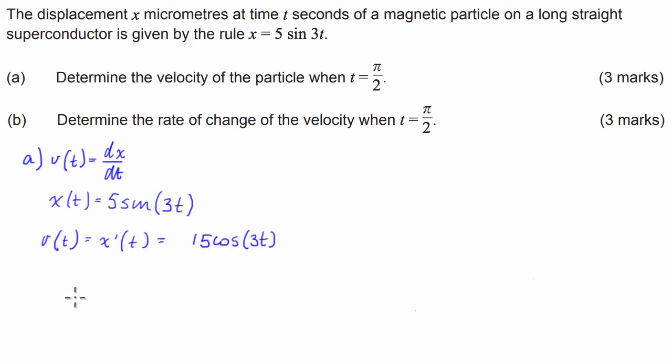So there is our velocity equation and then we have to compute velocity when we're at time equals pi over 2. So what we have here is 15 times the cosine of 3 pi over 2.